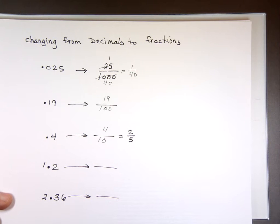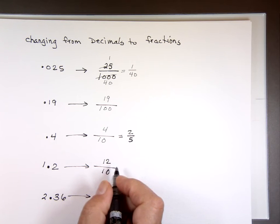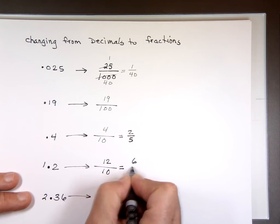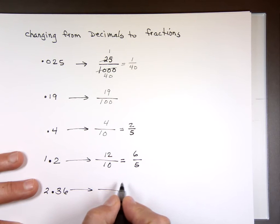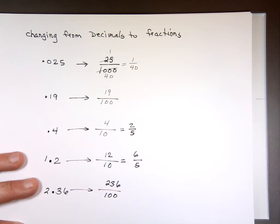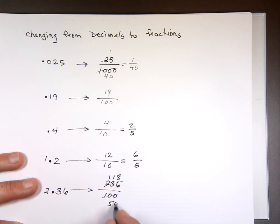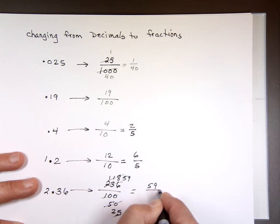This number. 12 over what? 10. Again, you only count the digits to the right of the decimal point. How many digits to the right of the decimal point? 1. How many zeros? 1. Can you simplify 12 over 10? 6 over 5. Last one. What is that going to be? 236. Over what? 100. If I divide by 2, that's a 50. Divide by 2, 118. I'm not done. Divide by 2 is 25. Divide by 2 is 59. 59 over 25 when you simplify it.